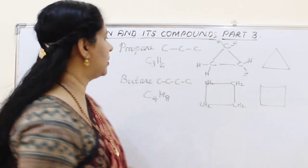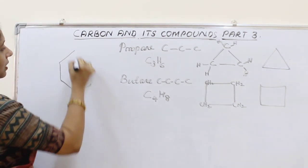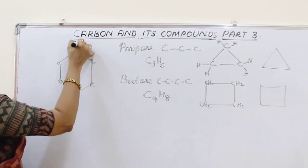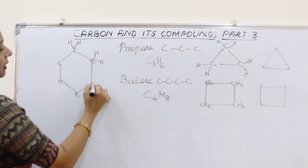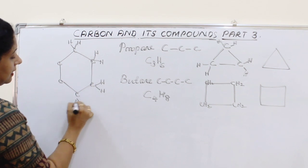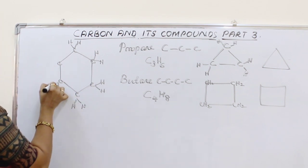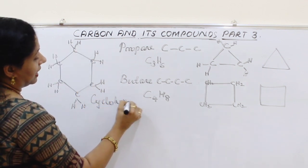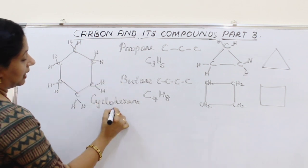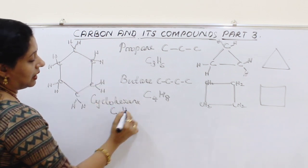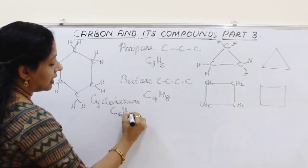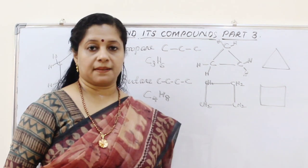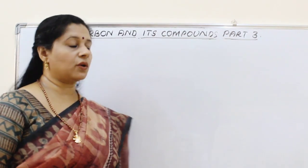Pentane and hexane can also be drawn as cyclic structures. Cyclohexane is given in your textbook and is a ring of 6 carbon atoms, each with 2 hydrogen atoms, giving the formula C6H12.